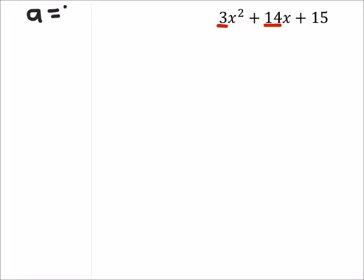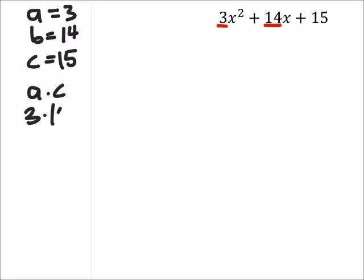We've got a is 3, b is a positive 14, and c is 15. So a times c, which would be 3 times 15, is 45.